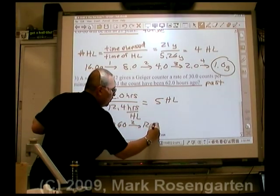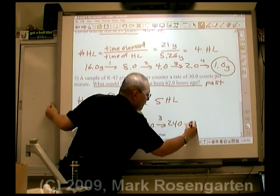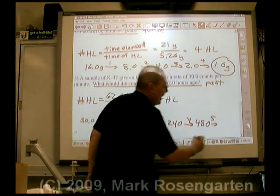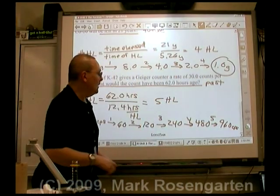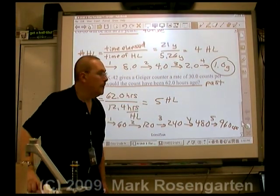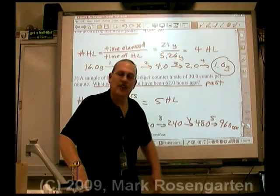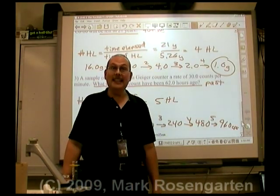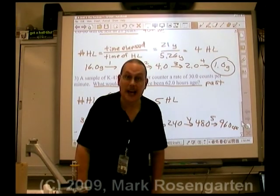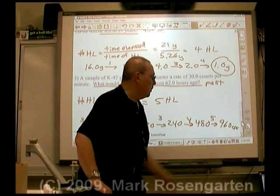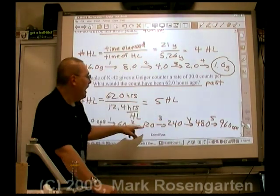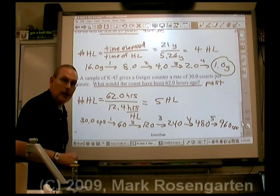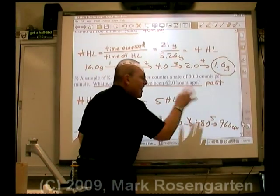Doubling once: 60. Twice: 120. Third time: 240. Fourth time: 480. And finally, doubling one last time: 960 counts per second. That means 62.0 hours ago, that Geiger counter was spitting out 960 counts per second — 960! So if you're going back to the past, find out how many half-lives you've undergone and double the amount you have that many times. And that's how you solve half-life problems.